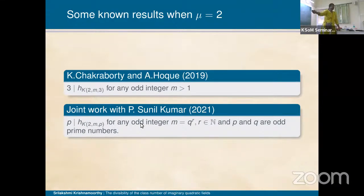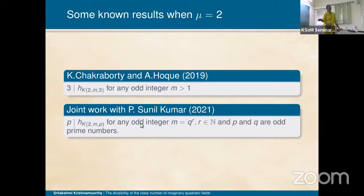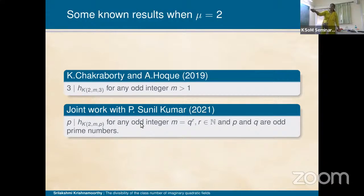We thought: what is special about 3? We should extend it to any odd prime, and we did. Luckily, while reading the work of T. N. Shorey on solutions of Diophantine equations, we saw that the number of prime factors is key. So instead of m, we can even put q^r. We are only looking at the number of prime factors of m, so m = q^r works. This is joint work with my student, for m equal to prime power.